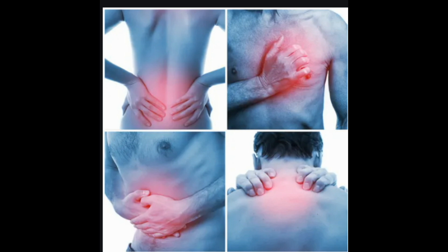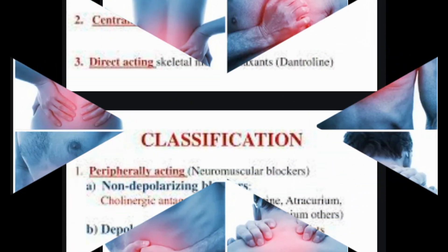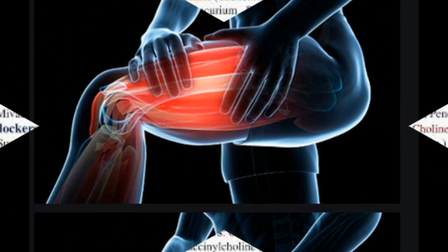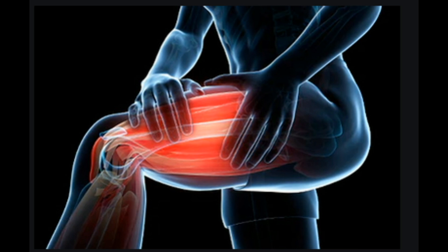Prescription drugs can help relieve the pain and discomfort from muscle spasms or spasticity. Certain over-the-counter medications may also be used. Prescription medications are divided into two groups: antispasmodics and antispastics. Antispasmodics are used to treat muscle spasms, and antispastics are used to treat muscle spasticity. However, antispastics should not be used to treat muscle spasms.